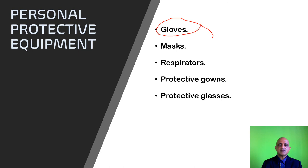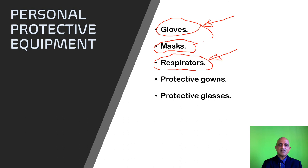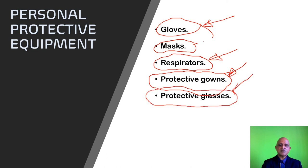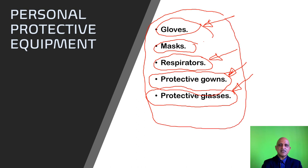Personal protective equipment includes gloves — different kinds depending on the type of laboratory procedure; for example, when working with animals you may need special gloves to prevent bites and scratches. It also includes masks and respirators — respirators are masks fitted with motorized HEPA filters. Protective gowns protect your skin from cutaneous infection via spills, and protective glasses protect your eyes from viruses which may enter through the ocular route. These will be discussed in a subsequent lecture.